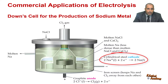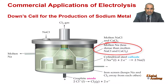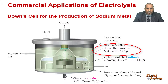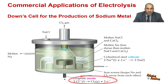The liquid sodium produced at the cylindrical steel cathode is less dense than the molten salt and thus floats to the top of the cell, where it is drawn off into a suitable container. Chlorine gas forms at the graphite anode, which is separated from the cathode by an iron screen to keep the highly reactive sodium and chlorine away from each other.